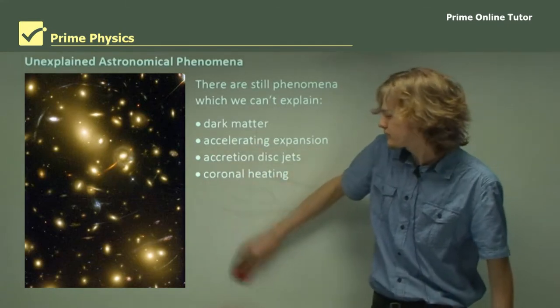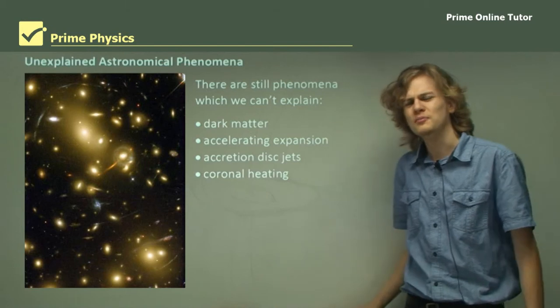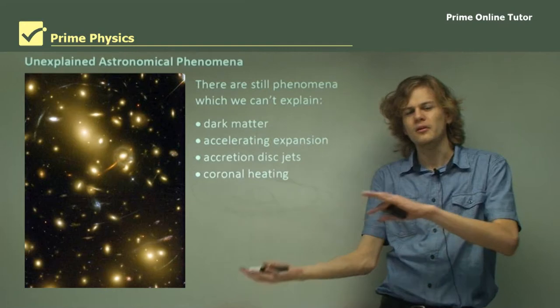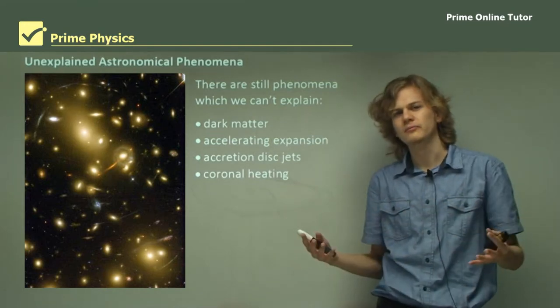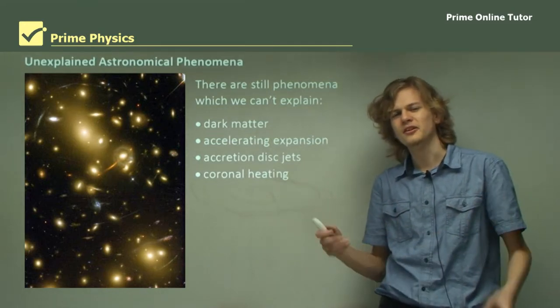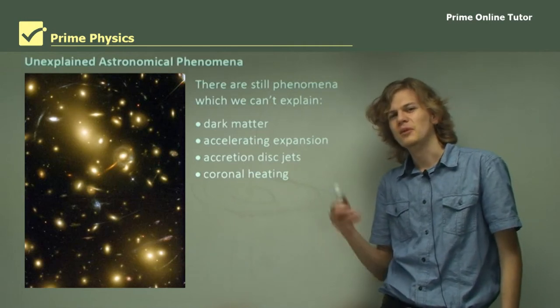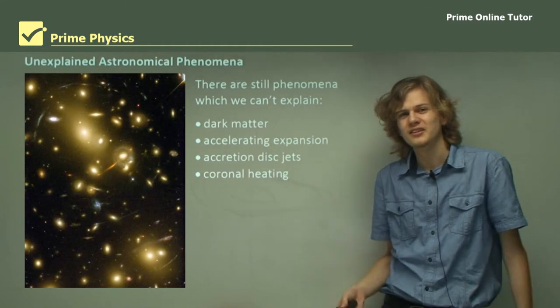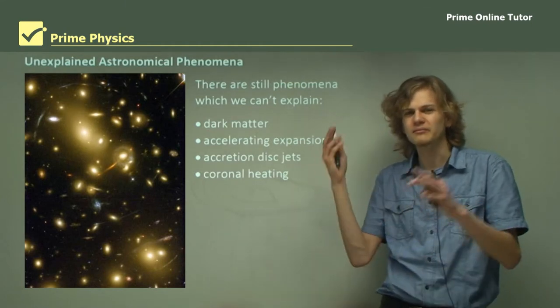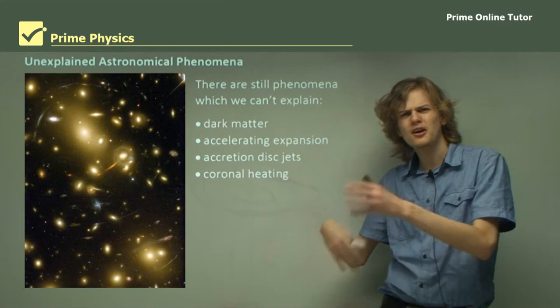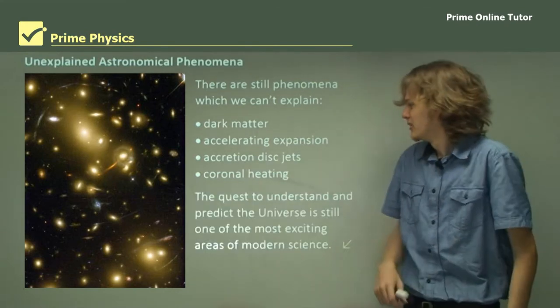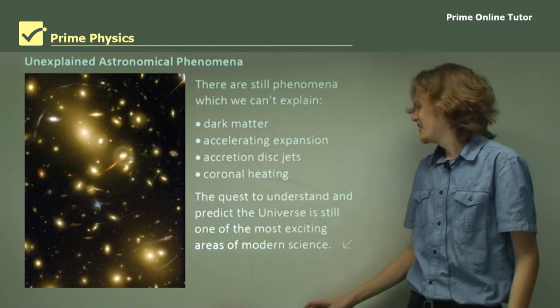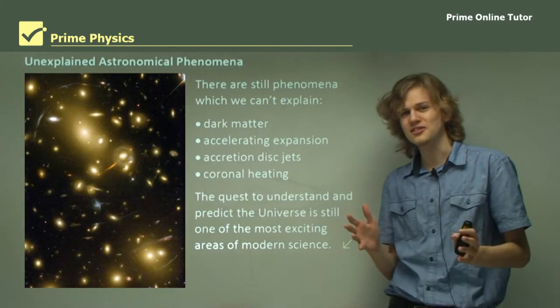Coronal heating is another unexplained mystery of the universe. If we look at the corona of our sun, which is an amount of very sparse matter around our sun, it is in fact much hotter than the surface of the sun. We don't know why this is either. The quest to understand and predict the universe is in fact still one of the most exciting areas of modern science.